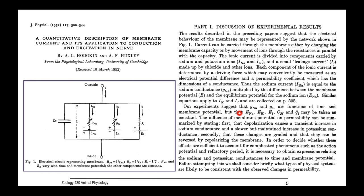Our experiments suggest that conductance, GNA and GK, are functions of time, that can change, and membrane potential. But that ENA, EK, EL, CM, and GL may be taken as constant. That's important.